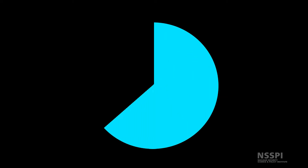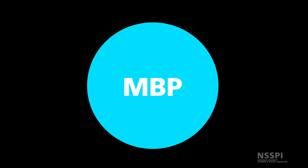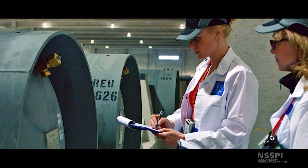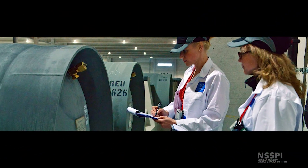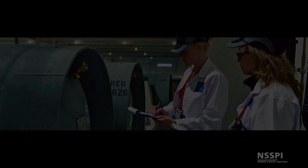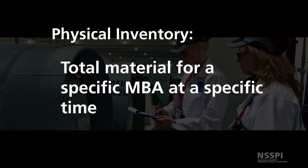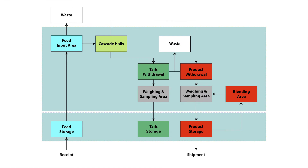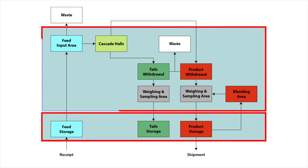At the end of each material balance period, a physical inventory is taken to determine the total material in each material balance area. The physical inventory is the determination of the total material for a specific MBA at a specific time. In our simplified uranium enrichment facility, a physical inventory would be performed in our two MBAs: the storage area and the process area.